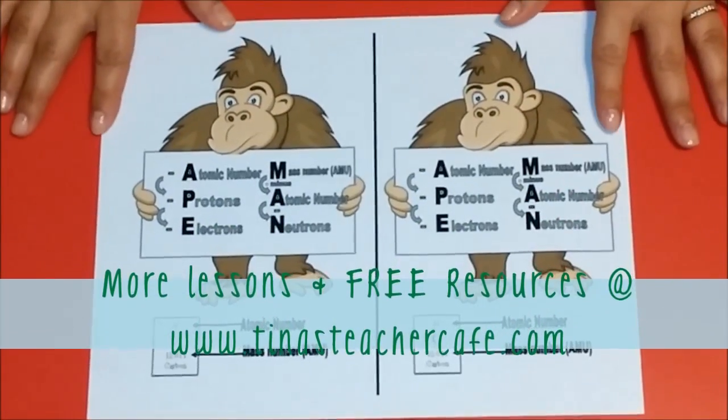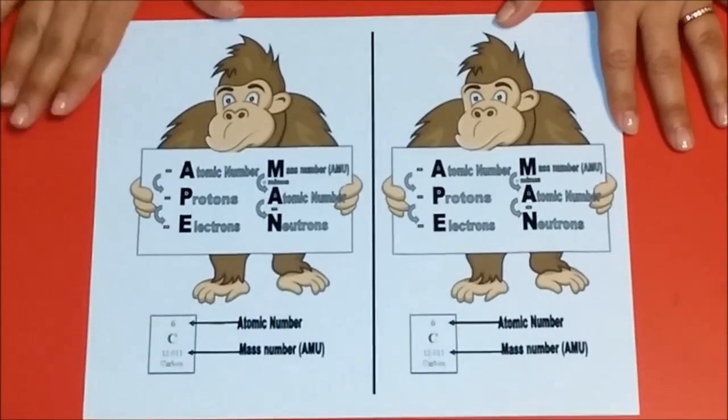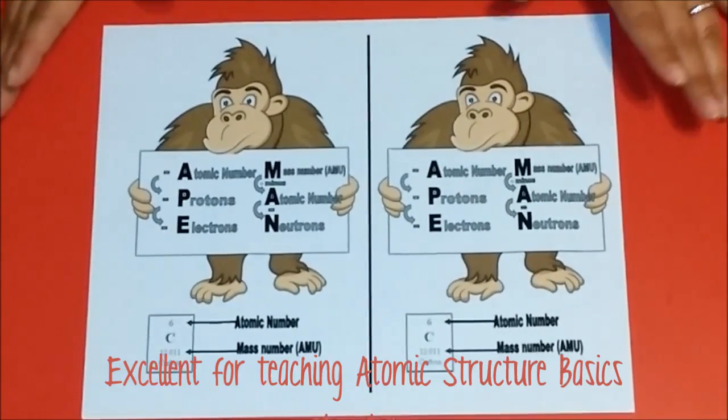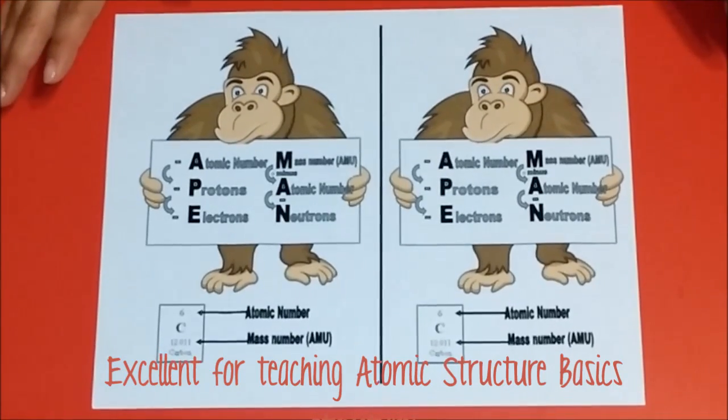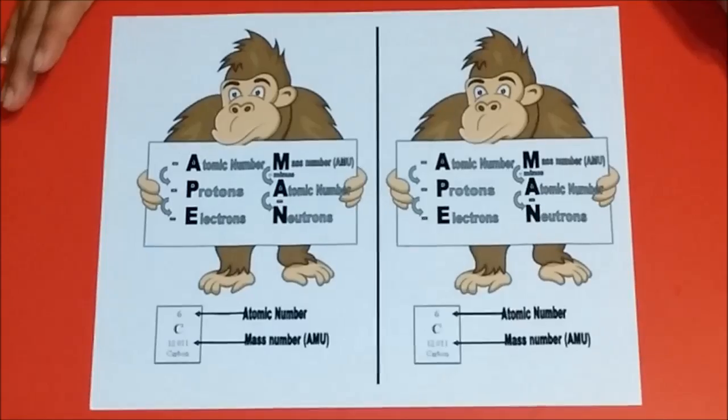This is called the APE-MAN mnemonic. What it does is it helps students with atomic structure. Once students have a grasp of atomic structure, then they're able to learn anything from valence electrons, reactivity, periodic tables, metals, nonmetals, elements, and compounds with relative ease.